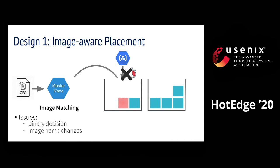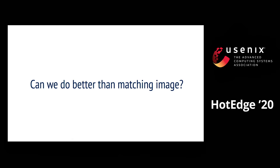Doing so will save the node from pulling the image. This approach is simple but has limitations. For example, image names can change, and such changes will lead to misses in image matching. Also, image matching makes a binary decision — either it finds a node that has the image and also has available resources, or none. Can we improve image matching?